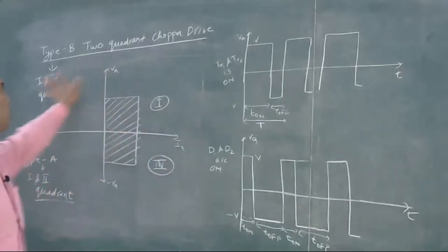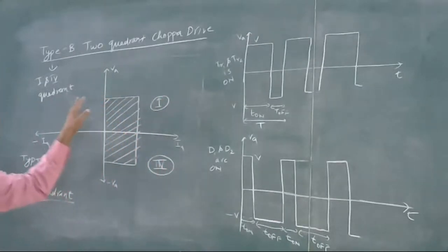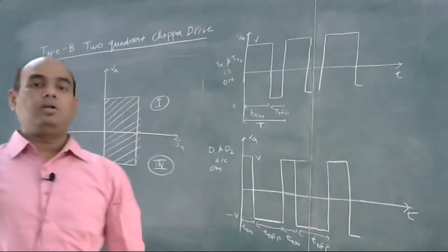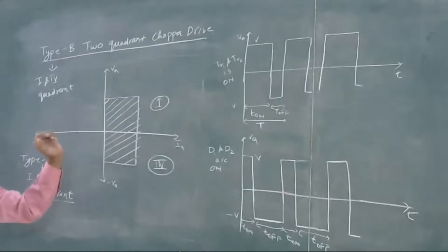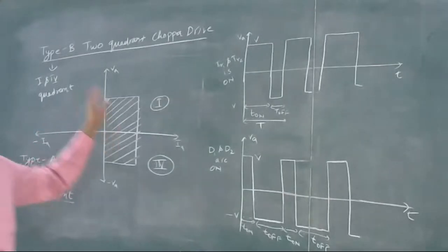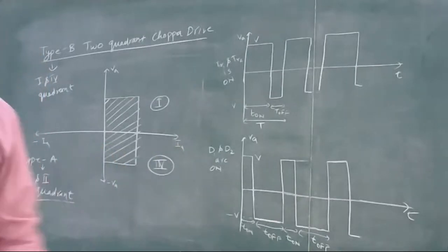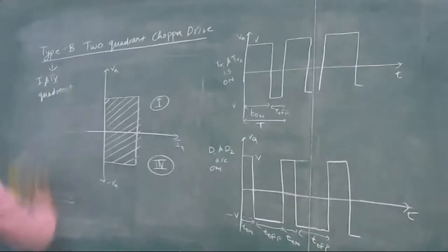This type of chopper — Type B — is very rarely used compared to Type A and finds more application in the field control method, where we control the field current. This is all about the Type B two-quadrant chopper drive.